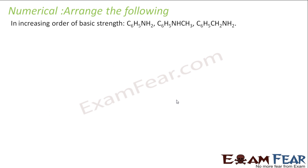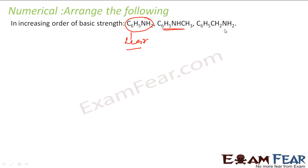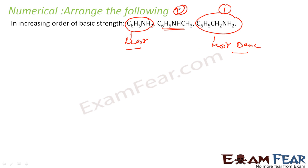The next question asks to arrange in increasing order of basic strength. The aliphatic amine will be most basic because out of the three compounds, one is aliphatic and two are aromatic — aliphatic amines are more basic. Comparing the two aromatic amines: the one with at least one CH3 group is more basic than the one with both hydrogens on nitrogen, which is least basic.